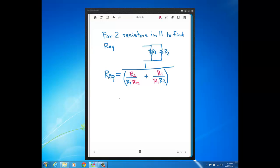Well then what we have is R2 plus R1 over R1 times R2 all over 1. So if we flip that up, see we get that the REQ of two resistors in parallel is the product of the two resistor values. So R1 times R2 divided by the sum of the two resistors.